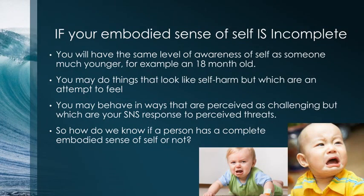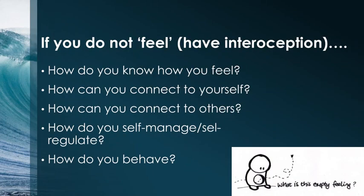How do we as professionals, family members, support workers, etc. know if a person has an incomplete or complete embodied sense of self? If you don't have good interoceptive awareness, you don't feel yourself, you're not connected to yourself, and you're not aware of how you feel. If you're not aware of those things, how can you possibly connect to others in a deep and empathetic, relational way? And how is it possible to self-manage or self-regulate if you don't know when you're getting angry, hungry, or thirsty?